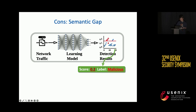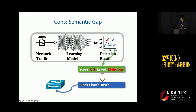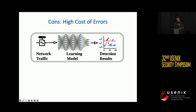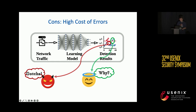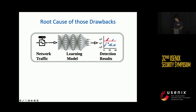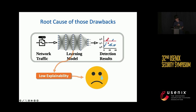As previously mentioned, the detection results are usually shown as scores or labels, but they do not provide enough information for network operators to understand, let alone take actions. For example, the score may seem malicious, but we don't know which flow or host to block. The lack of actionable interpretation can lead to hesitation in response, potentially exposing the network to unnecessary risks. On the other hand, attackers always try to exploit false negatives, and a number of false negatives may lead to significant security breaches. High occurrences of false positives demand huge human effort, which is time-consuming and unrealistic. Notably, both drawbacks are rooted in the same problem: the low explainability of deep learning models.